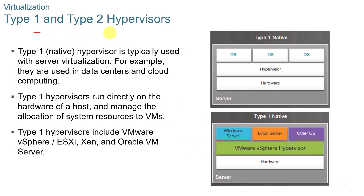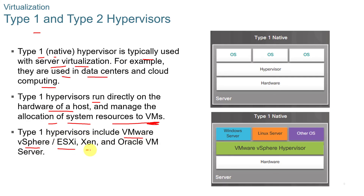There are type one and type two hypervisors. Type one, also called native, is typically used with server virtualization — for example in data centers and cloud computing. Type one hypervisors run directly on the hardware of a host and manage the allocation of system resources to the VMs. Type one hypervisors include VMware vSphere/ESXi, Xen, and Oracle VM Server.